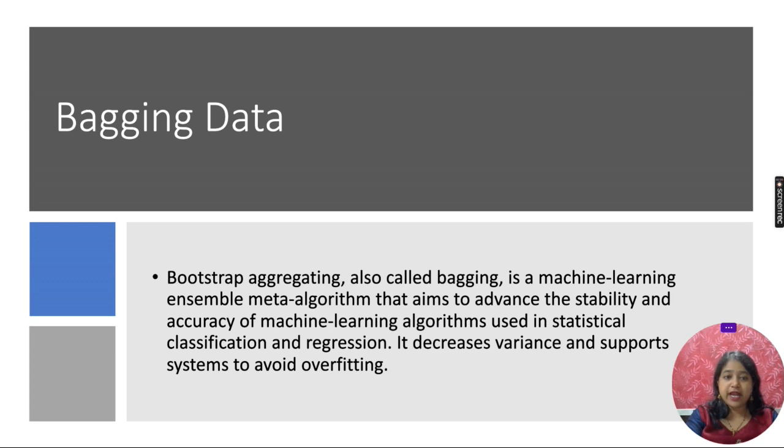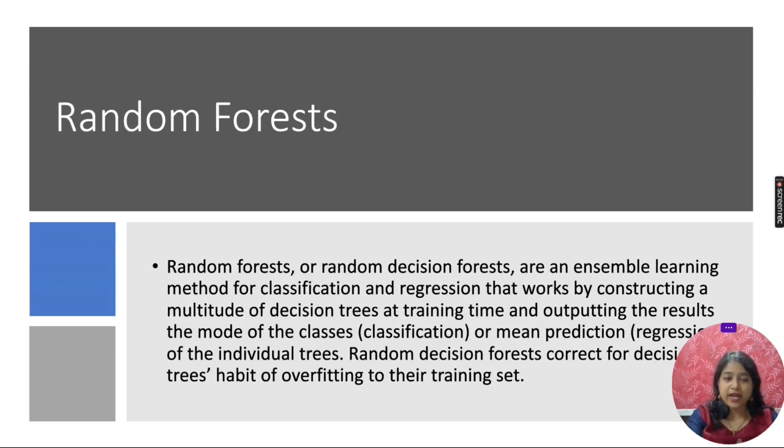It decreases variance and helps the system avoid overfitting. Random forests or random decision forests are an ensemble learning method for classification and regression that works by constructing a multitude of decision trees at training time and outputting the results.